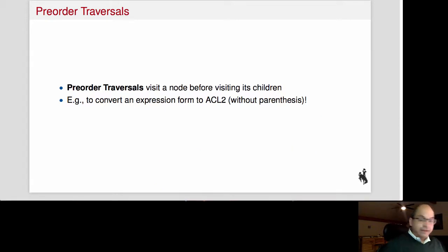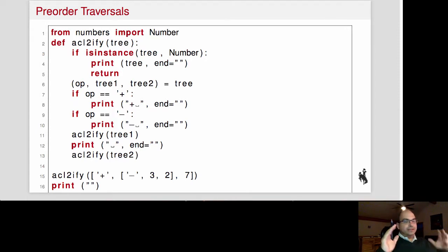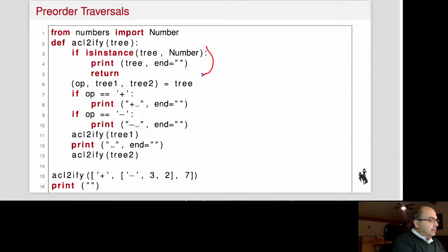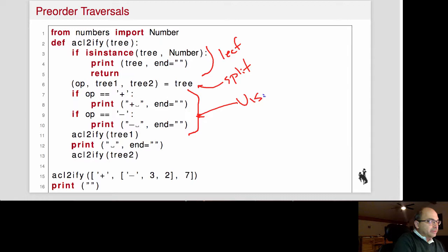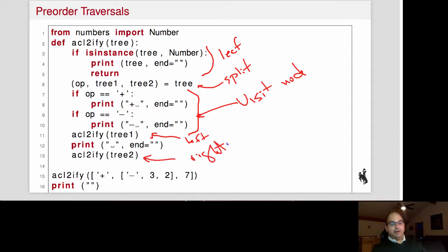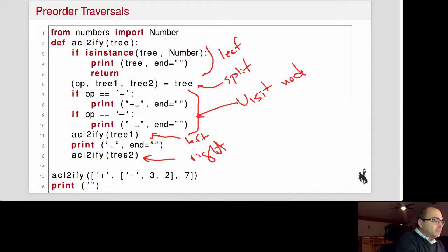Let's look at the code that accomplishes that. It's very similar to what we had before. This handles the leaf case — if it's a leaf, we just print the number it corresponds to. Otherwise, we split it into the operator, left child, and right child. Notice: we visit the node first by printing it, then we visit the left, then we visit the right. Visit the node first — that is a pre-order traversal.